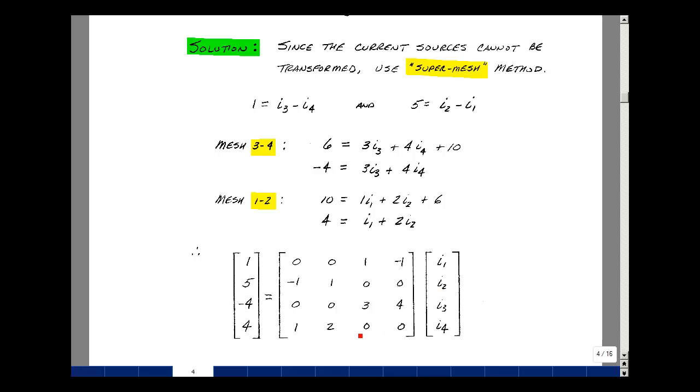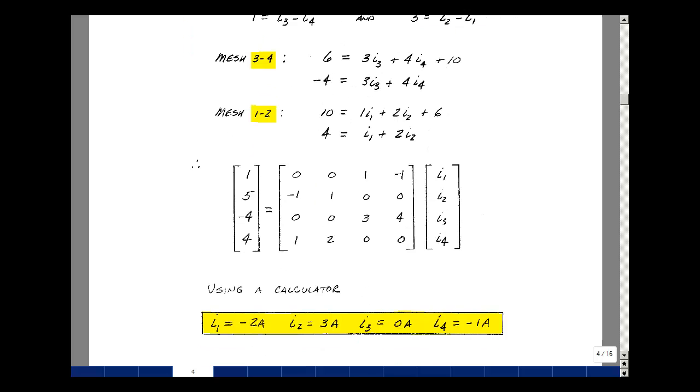We have a lot of zeros in here. It wouldn't be that hard to use Kramer's rule to solve for this, or again, you can use your calculator. And I found that I1 was minus 2 amps, I2 was 3 amps, I3 was 0, and I4 was minus 1 amp.